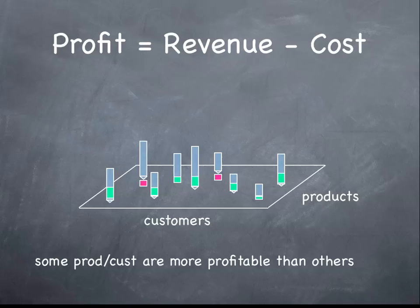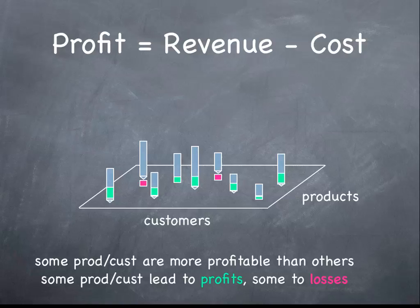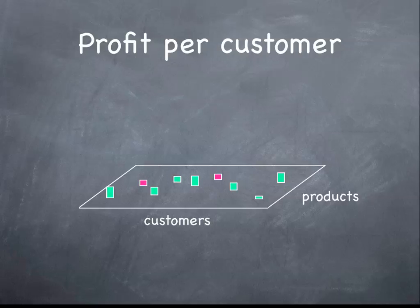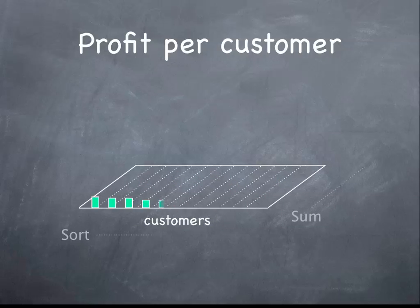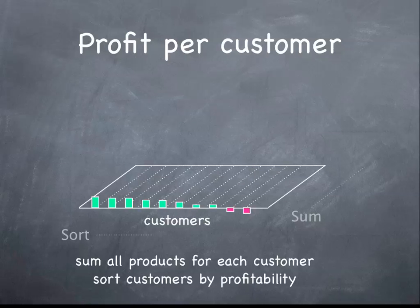Some of them are more profitable than others, and some of them lead to profits, and unfortunately a few of them tend to lead to losses. Let's now look at the profits for only the customers by summing across all the products that this particular customer has bought, and then sorting the resulting values by decreasing profitability. This picture already shows us who the most profitable customers are and who the customers in the red — the so-called profit takers — are.